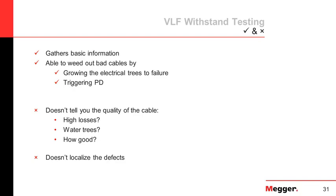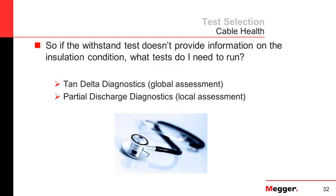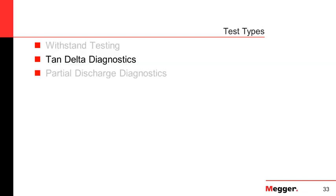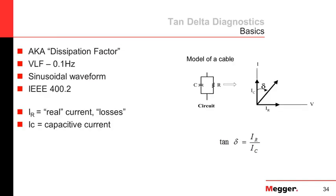If the withstand test doesn't provide a lot of information on cable insulation quality, there are two more diagnostics: tan-delta diagnostic and partial discharge diagnostic. Tan-delta, also known as dissipation factor, uses a frequency of 0.1 hertz in a sinusoidal waveform. Guidelines can be found in IEEE 400.2. It looks at the ratio of two currents — the real or resistive current and the capacitive current.